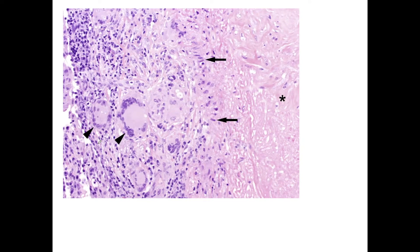On histopathology, when the slide is seen under the microscope, we see epithelioid cell granulomas with Langhans-type giant cells — these are modified macrophages — and caseating necrosis in the dermis. This is a paucibacillary lesion, so very few bacilli are seen in the dermis.